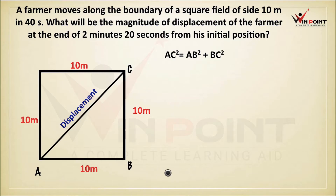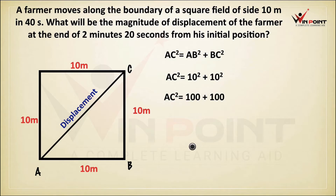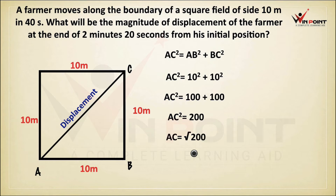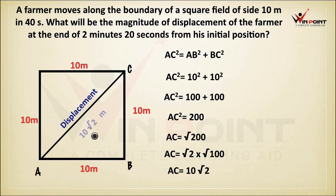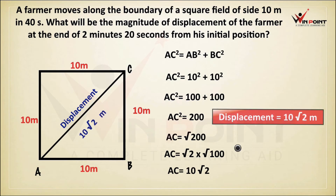AB is 10 and BC is 10. So AC squared equals 10 squared plus 10 squared, which is 100 plus 100 equals 200. Therefore AC equals the square root of 200. We split that as root 2 multiplied by root 100. Root 100 is 10, so AC equals 10 root 2. The displacement is 10√2 meters. The magnitude of displacement of the farmer at the end of 2 minutes 20 seconds from his initial position is 10√2 meters.